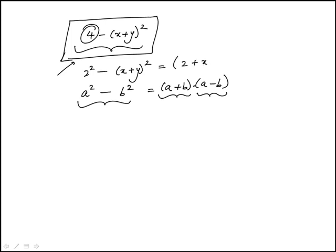This would be 2 plus x plus y, because this would be b and that's a, and then it would be 2 minus (x + y), so there's parentheses here.